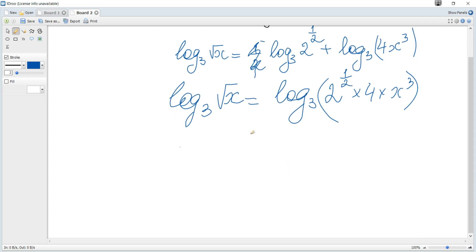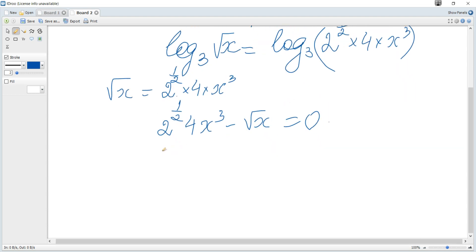And hence we can equate expressions under the logs. Square root of x equals 2^(1/2) times 4 times x³. Move all terms to one side. We can factor out a square root of x.